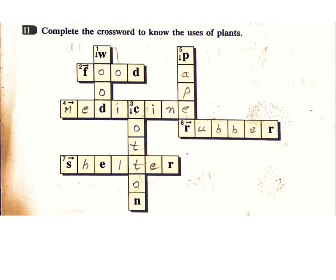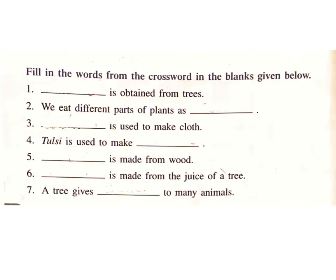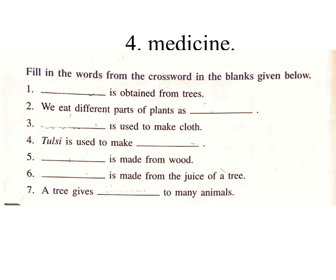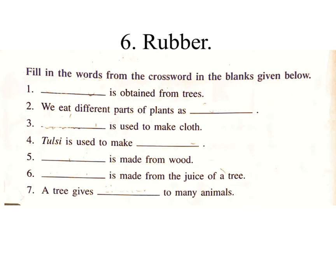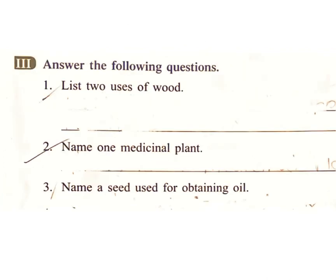Exercise 2 – Complete the crossword to know the uses of plants: wood, food, cotton, medicine, paper, rubber, shelter. Fill in the words in the blanks: 1. Wood is obtained from trees. 2. We eat different parts of plants as food. 3. Cotton is used to make cloth. 4. Tulsi is used to make medicine. 5. Paper is made from wood. 6. Rubber is made from the juice of a tree. 7. A tree gives shelter to many animals.